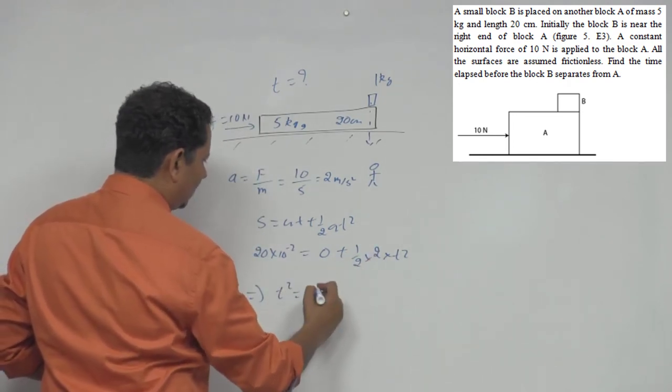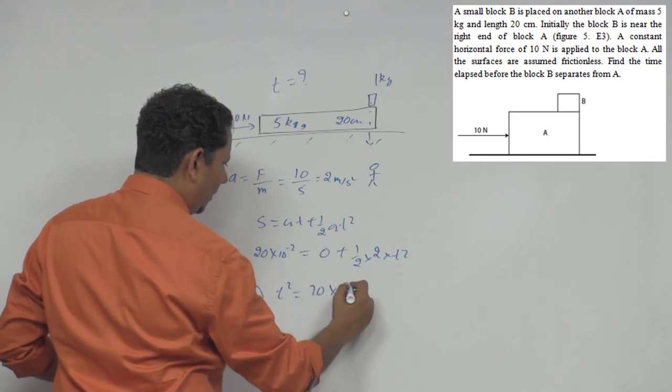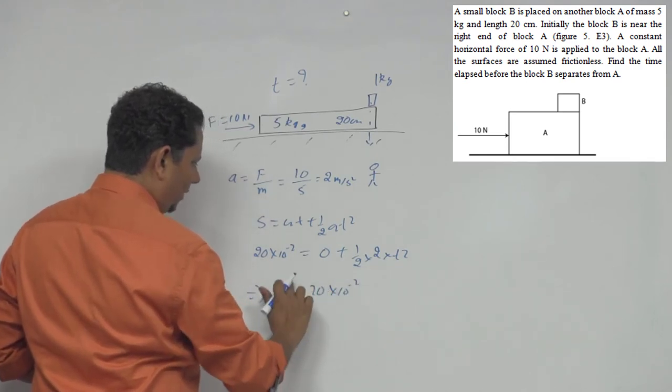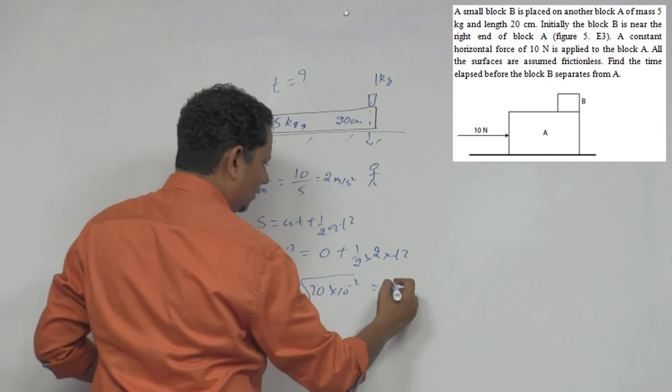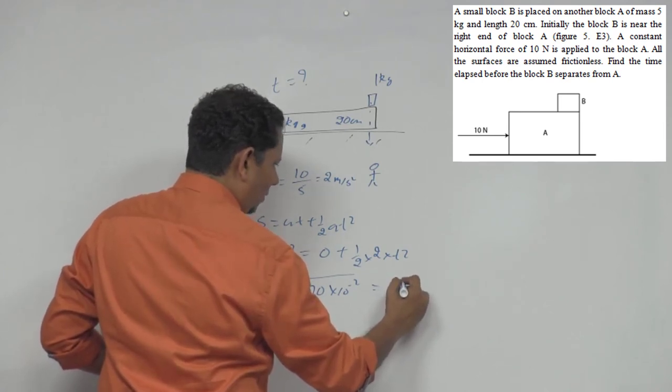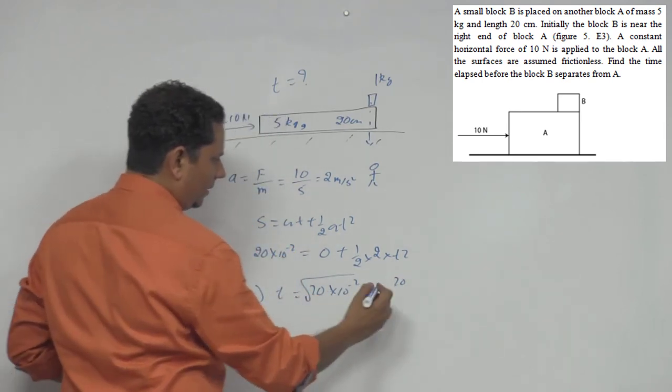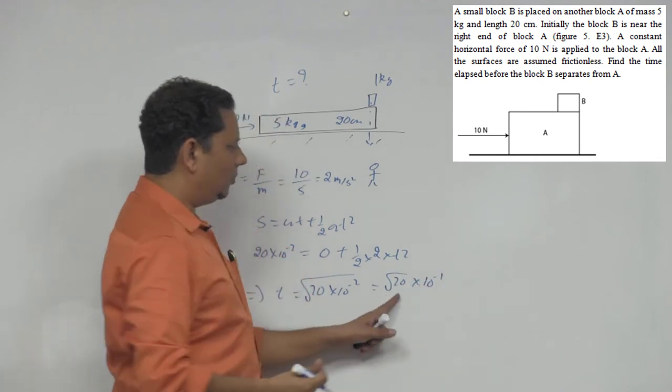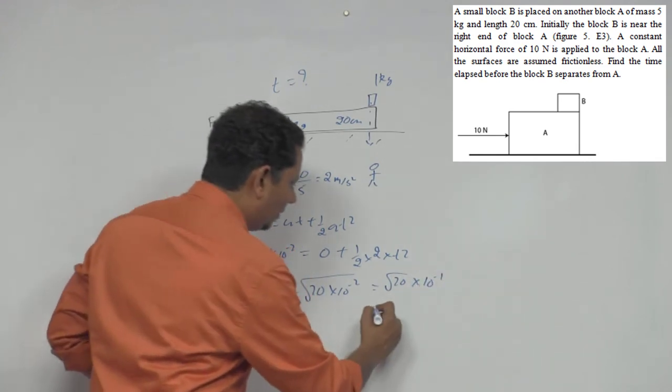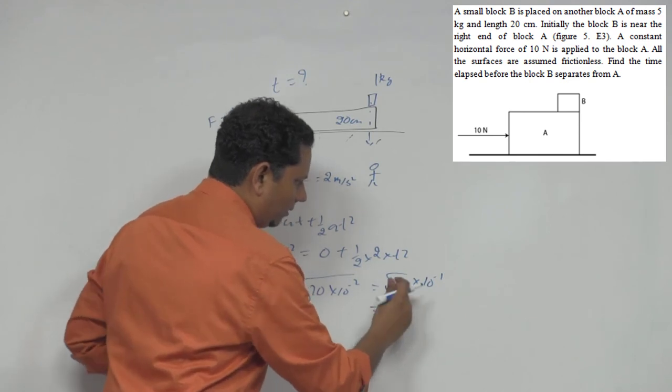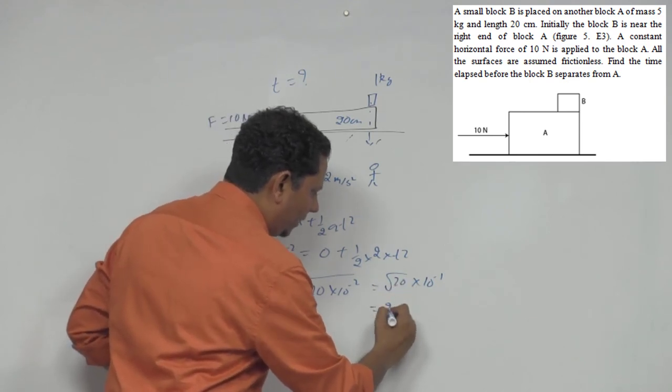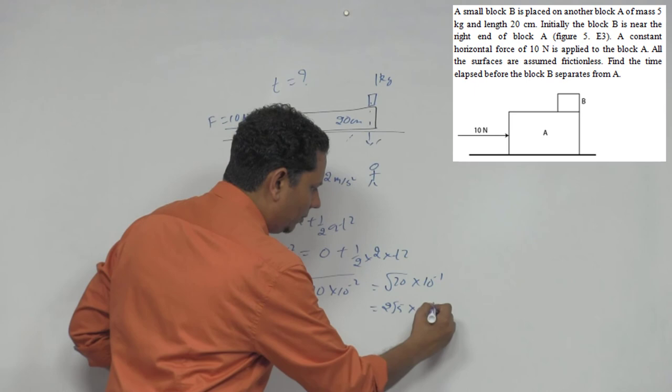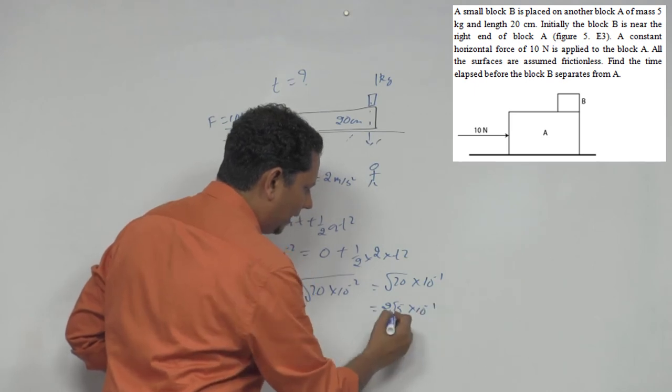Which implies that t square value will be - 2 cancels, 20 into 10 to the power minus 2. And t value, taking the square root, this will be equal to square root of 20 multiplied by 10 to the power minus 1. Square root of 20 means this equals 4 root 5, which is 2 root 5 into 10 to the power minus 1. This is your time.